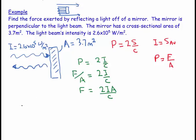So if I put numbers in, I see I get my force is equal to 2, and my intensity is 2.6 times 10 to the 5, and then I have my area which is 3.7, over my speed of light which is 3 times 10 to the 8.